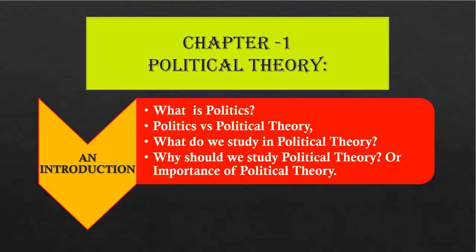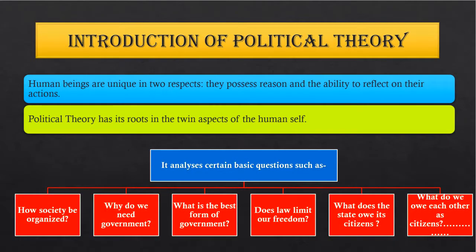Introduction of Political Theory: Human beings are unique in two respects — they possess reason and the ability to reflect on their actions. Insaan do baton mein bahut zyada unique hote hain: unke paas reason yani buddhi hoti hai, aur doosri baat — ability to reflect on their actions. Jab bhi hum koi kaam karte hain usko reflect kar sakte hain, yani unke paas language hoti hai. Political theory has its roots in these twin aspects of human self.